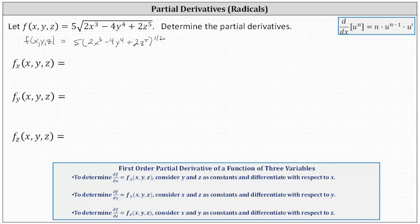Now to find the partial derivatives, we'll be using the derivative formula shown in the upper right-hand corner, where the derivative of u to the power of n with respect to x is equal to n times u to the power of n minus one, times u prime. However, u prime is going to be a partial derivative based upon which partial we're determining. We can think of the base 2x cubed minus 4y to the fourth plus 2z to the fifth as u.